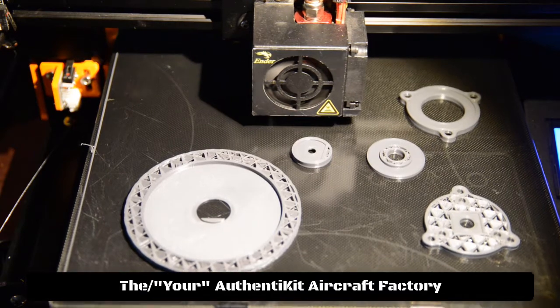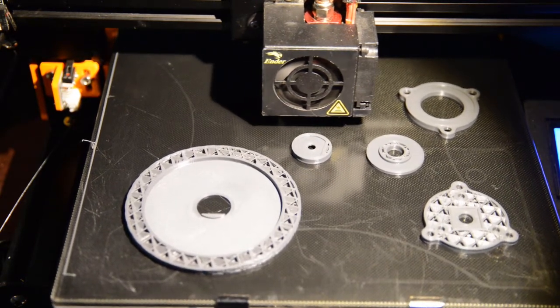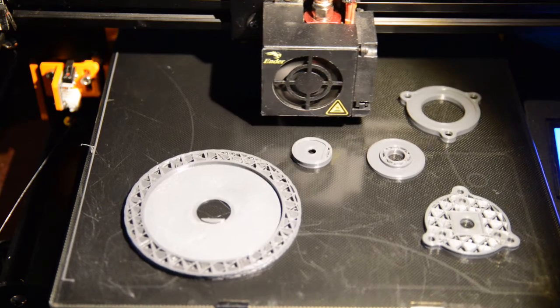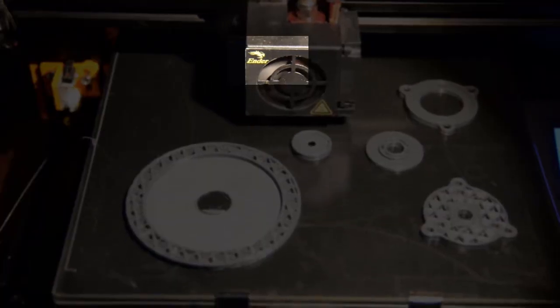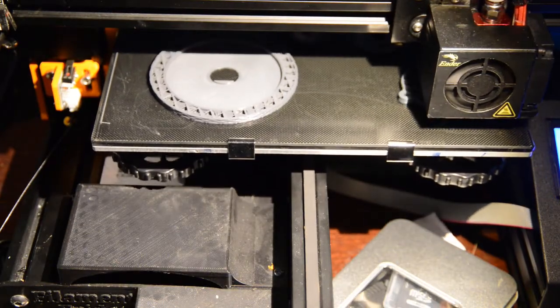So let's go to the Authentikit Aircraft Factory, which is currently making a DR400 trim wheel using my trusty Ender 3. It's probably the most popular 3D printer around, mainly as it only costs around $170.